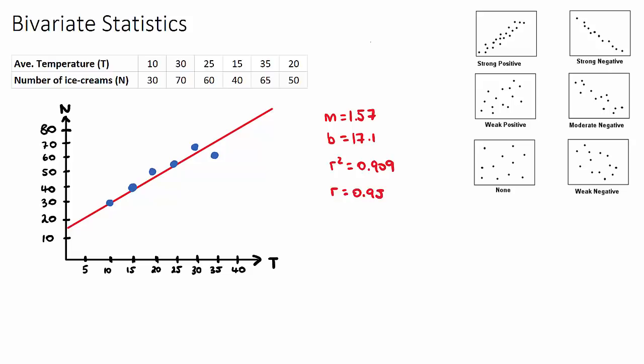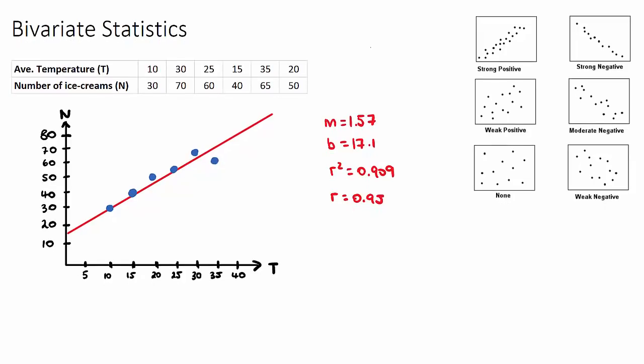These are the key bits of information that we need for this topic. m stands for the gradient of our line, so we know that we have a slope of 1.57 and that will have a meaning in a lot of these questions. Our b value is our y-intercept, which our original drawing was pretty good at 17.1. So our linear regression line will be N equals 1.57 times T plus 17.1. This will be our linear regression equation.